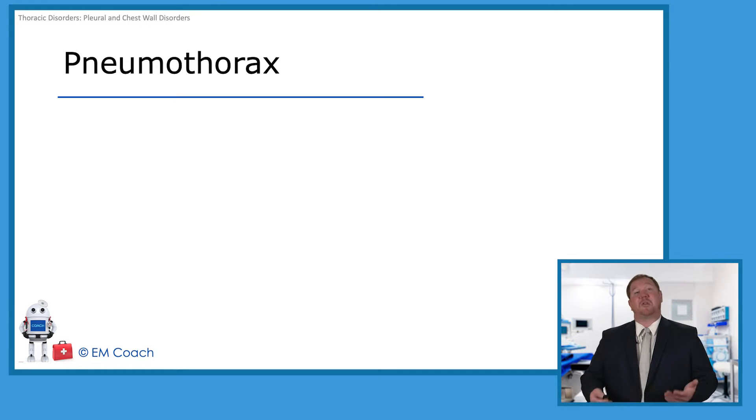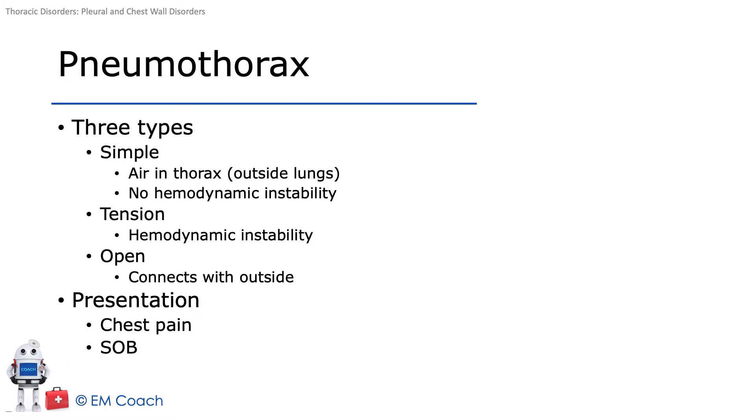So pneumothorax, which we see fairly commonly in the ED, but what can they test us on when it comes to this? So there are three main types: the simple, the tension, and the open.